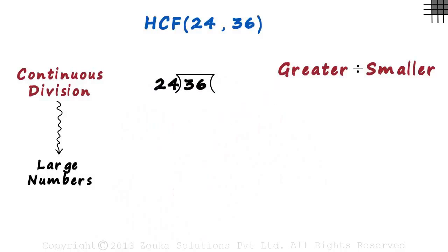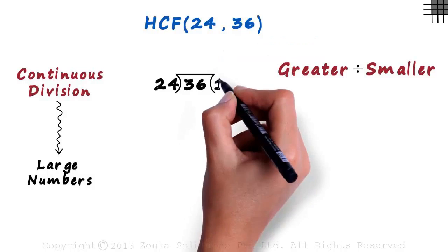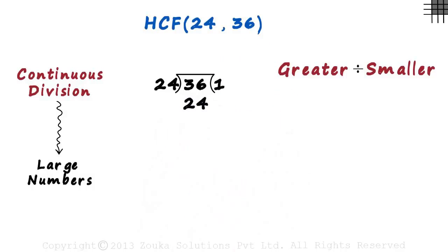We are generally used to writing the quotient on top, but in this method we will write it here. 24 times 1 is 24, and 36 minus 24 is 12. But wait! We're not done yet. The name says continuous division. This was just the first part. We got the quotient as 1 and the first remainder as 12.